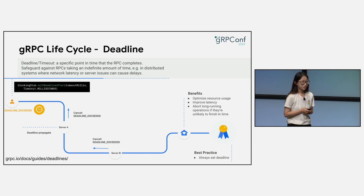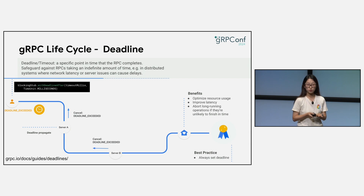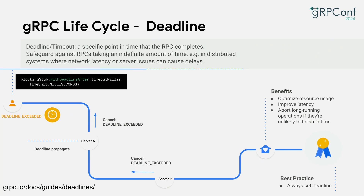Deadlines and timeouts represent when the client is unwilling to wait for a response from the server. The client will receive a deadline exceeded status code from gRPC. This safeguards against RPCs taking an infinite amount of time, especially in distributed systems where network latency or server issues can cause delays. A deadline can be set from the client side when it starts an RPC. Some languages use the concept of deadline — a specific point in time the RPC cannot go past — while others use timeout, the maximum duration to complete an RPC. These two concepts are interchangeable.